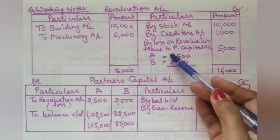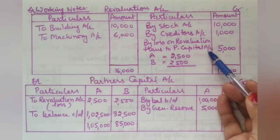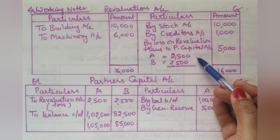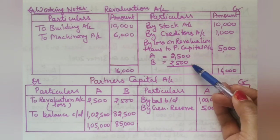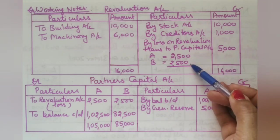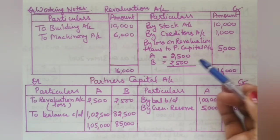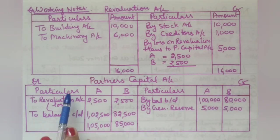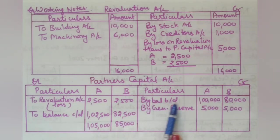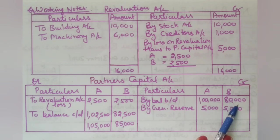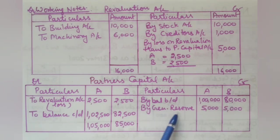The revaluation loss of 5,000 rupees is transferred to partners' capital accounts. Since the profit sharing ratio was equal, 2,500 rupees will be debited to each partner's capital account. In the capital account, opening balances brought down: A's capital is 1,00,000 and B's capital is 80,000. There was also a general reserve in the balance sheet — we need to decide whether to distribute it.